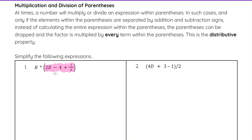We can't combine any of these terms because we have 2b, a minus 4 which is a constant without a variable, and 1 divided by b where b is in the denominator. We can't merge them by adding or subtracting — this is as simplified as it can get. So to simplify further with b multiplied in front, we can distribute the b to every term inside the parentheses. I'll show you how to write that out, including the small steps.